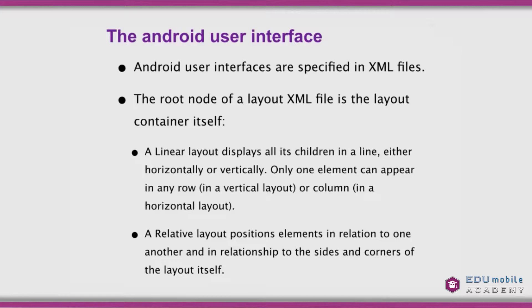A linear layout displays all of its children in a line, hence the name. That line is either going to be horizontal or vertical — it's a list of controls you can think of. Only one element can appear in any row in a vertical layout or any column in a horizontal layout, so we're somewhat constrained. Before relative layouts, we would set up a linear layout and then nest other linear layouts inside of it to get the desired result.